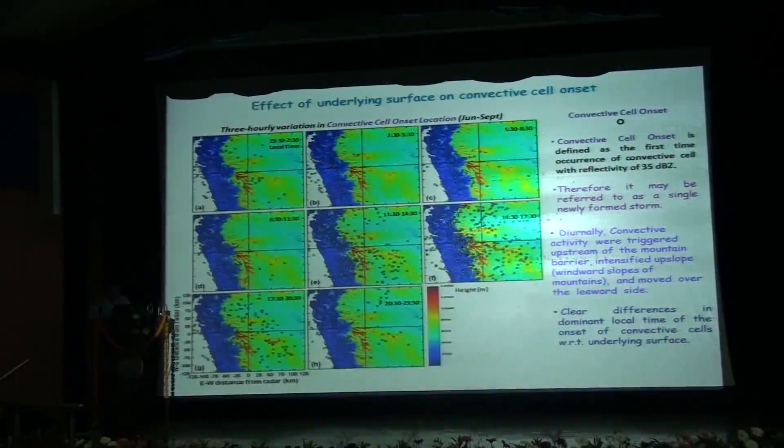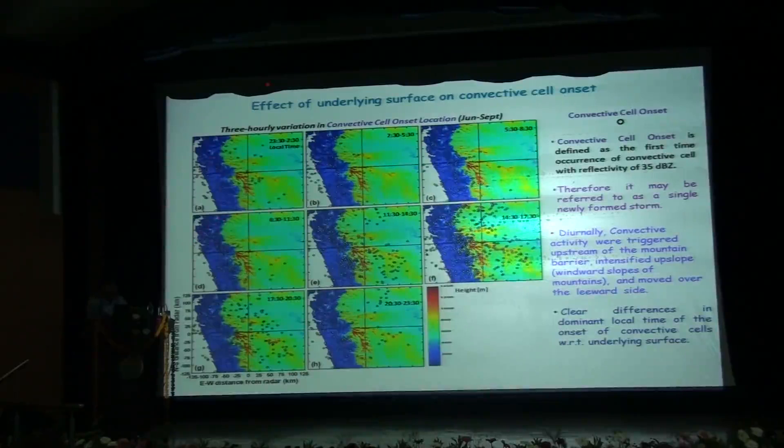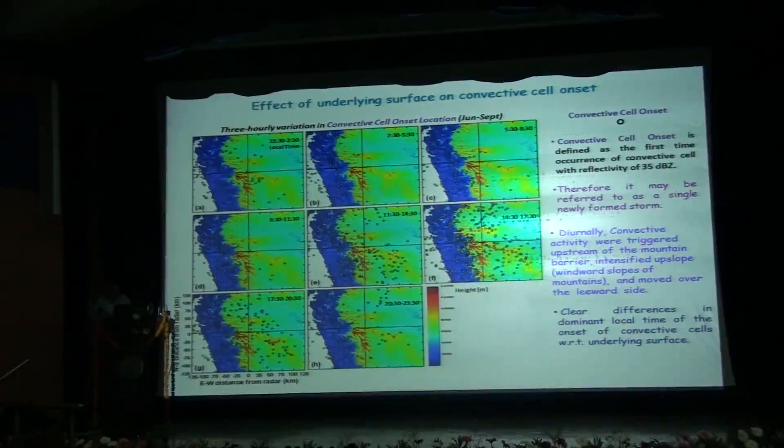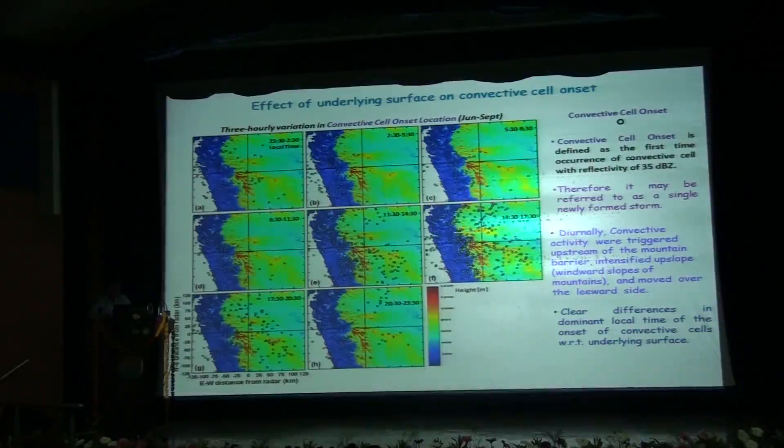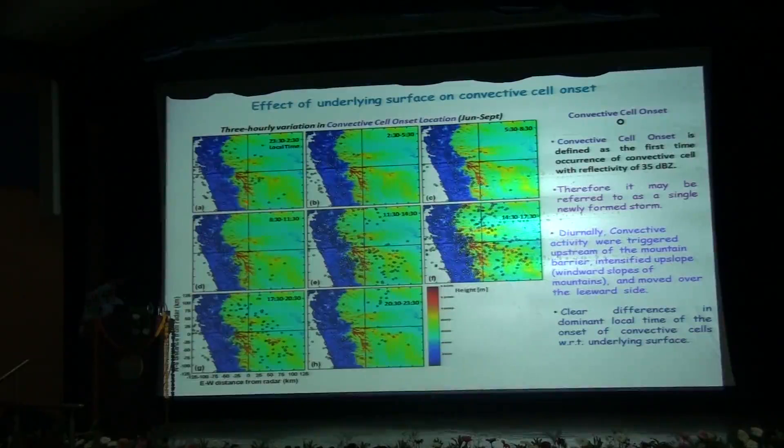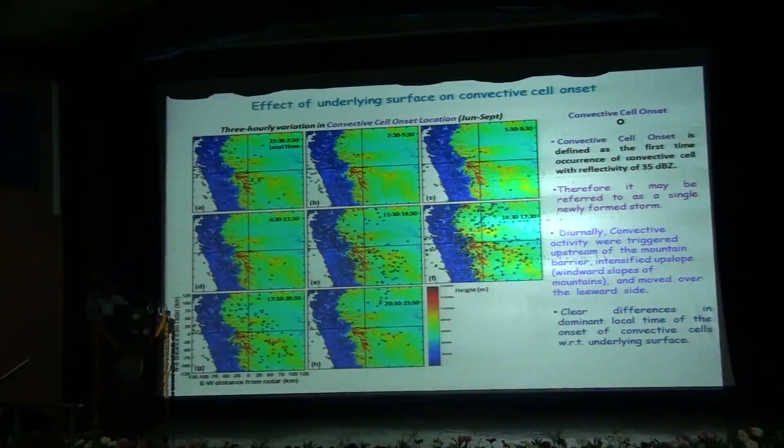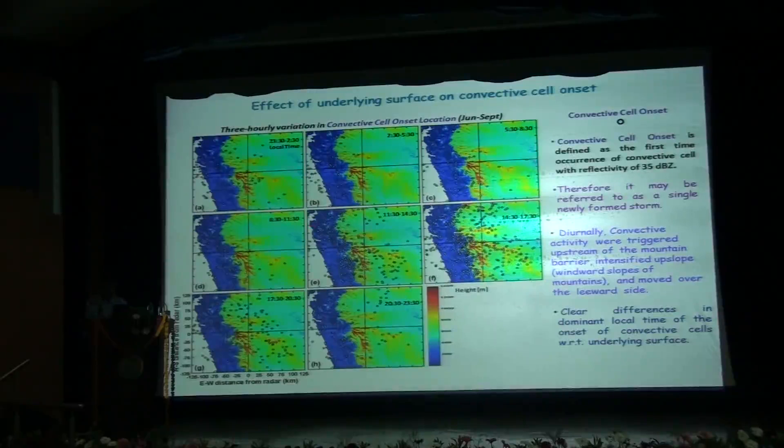Now we wanted to look into how the convection responds to changes in the underlying surface as the day evolves. For that we plot the three-hourly variation in the convective cell onset. The convective cell onset, as indicated by the black annular circle, is defined as the first-time occurrence of convective cells with reflectivity of 35 dBZ. Thus it may be referred to as a newly formed single storm. Diurnally, the convective activities triggered upstream of the mountain barriers. They intensified over the upslope or the windward slopes of the mountain and they moved over to the lee side. Thus there is a systematic eastward progression of the convective cell onset locations which shows clear differences in the dominant local time of onset of convective cells with respect to underlying topography.